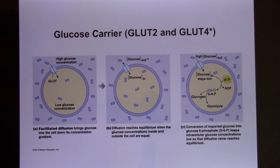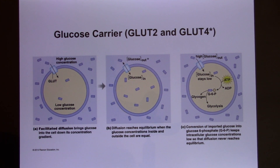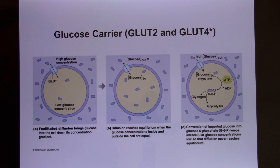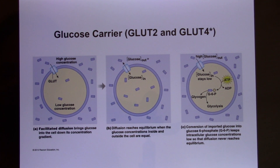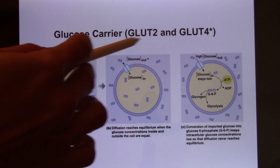Because glucose inside is converted to G6P, the glucose concentration inside stays low while outside remains high, so glucose keeps moving in. The glucose carrier is like the UT shuttle. During non-rush hour, a shuttle comes every 20 minutes and 10–20 students get on — that's fine. But during rush hour after 5 p.m., hundreds of students are waiting, so UT increases the shuttle frequency — every 10 or 5 minutes, sometimes two shuttles at once.